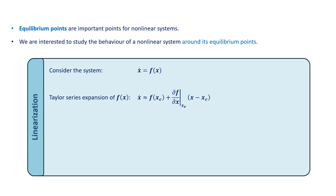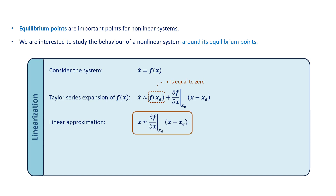So we can approximate the nonlinear system by this first-order system. We can further simplify this equation. Since we approximated the system around an equilibrium point, the first term on the right-hand side is 0 according to the definition of an equilibrium. So the approximated system around the equilibrium point x_e is x dot equals the partial of f with respect to x at x_e, times x minus x_e. This system can also be written in another coordinate system by applying the change of variable z equals x minus x_e.